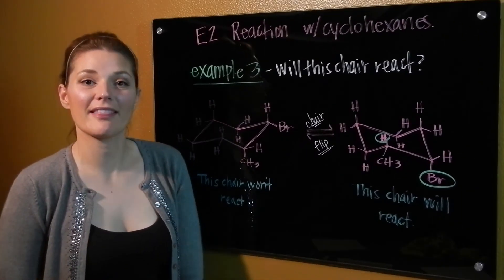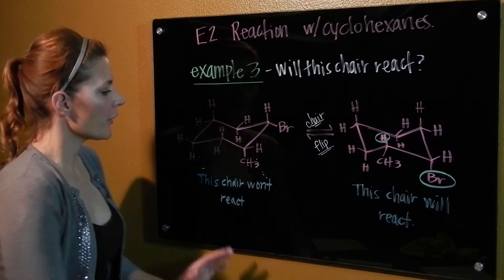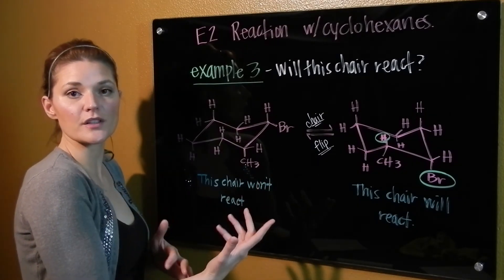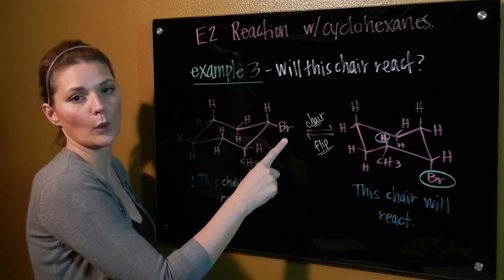Okay, so now in this example here, we want to just figure out, can the chair react? So if you were given this chair to start out with, remember the first thing you're going to do is look to see where the halogen is positioned. So in this case, our bromine is located equatorially.